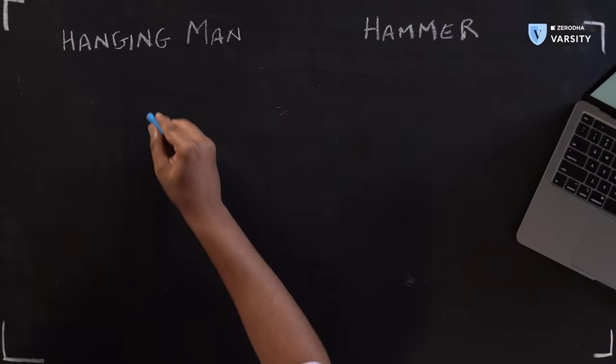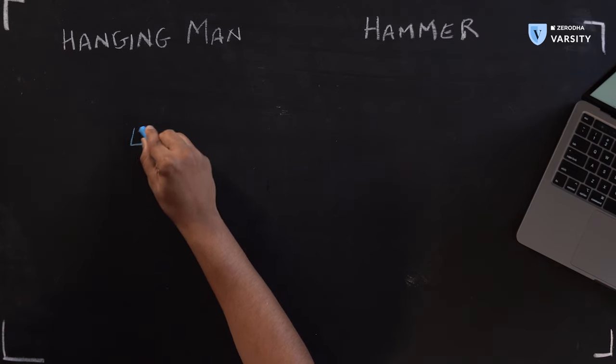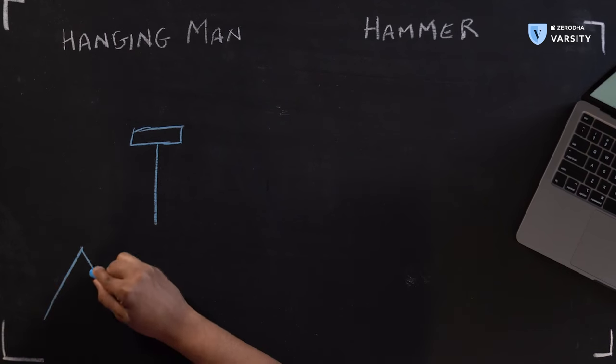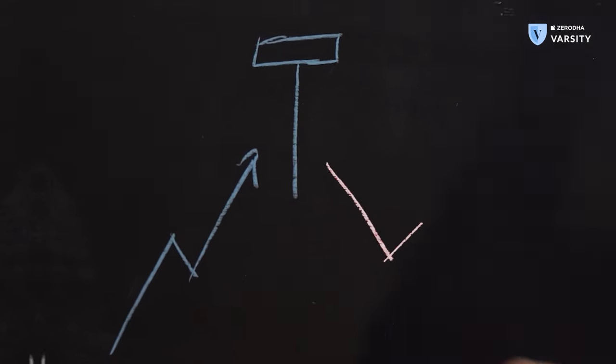It has a small real body and a long wick — the lower shadow should be at least 2x the real body. The hanging man only appears in the context of an uptrend, with the previous trend being up. Both the hanging man and the hammer are reversal patterns. When a hanging man appears in an uptrend, the expectation is that a downtrend may begin. When a hammer appears in a downtrend, the expectation is that the trend will reverse.